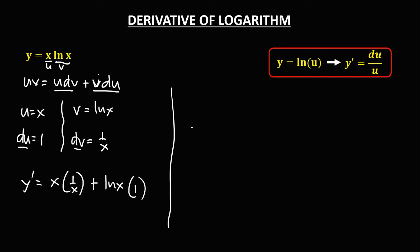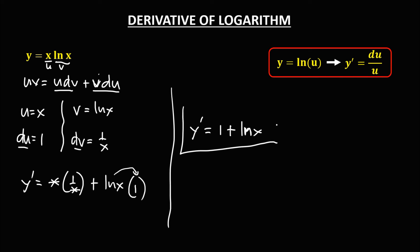Applying the formula: y prime equals x times (1 over x) plus ln x times 1. Simplifying, we cancel x, leaving 1 plus ln x. This is now the derivative.